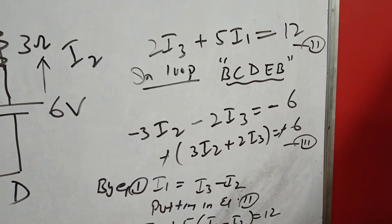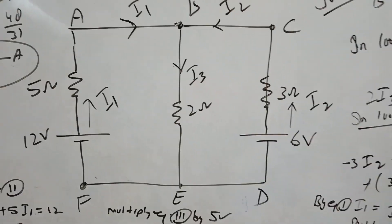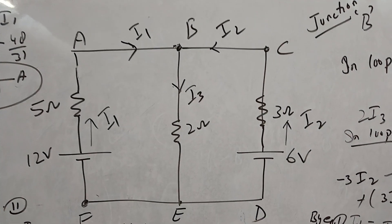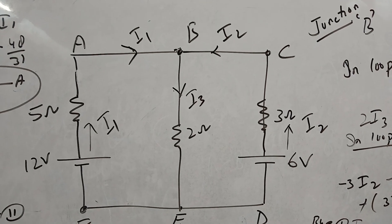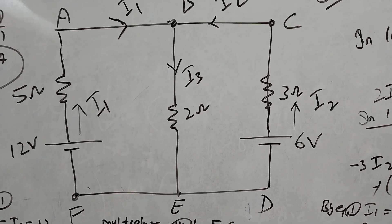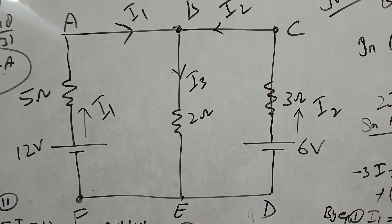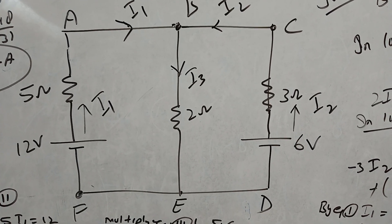Similarly, we will consider the other loop: B, C, D, E, B. In loop BCDEB, the direction of the current is not from B to C, it is going in the opposite direction. And from C to D, there is I2 current going in the opposite direction. So we will use minus 3I2. And in the arm BE, there is also a current.